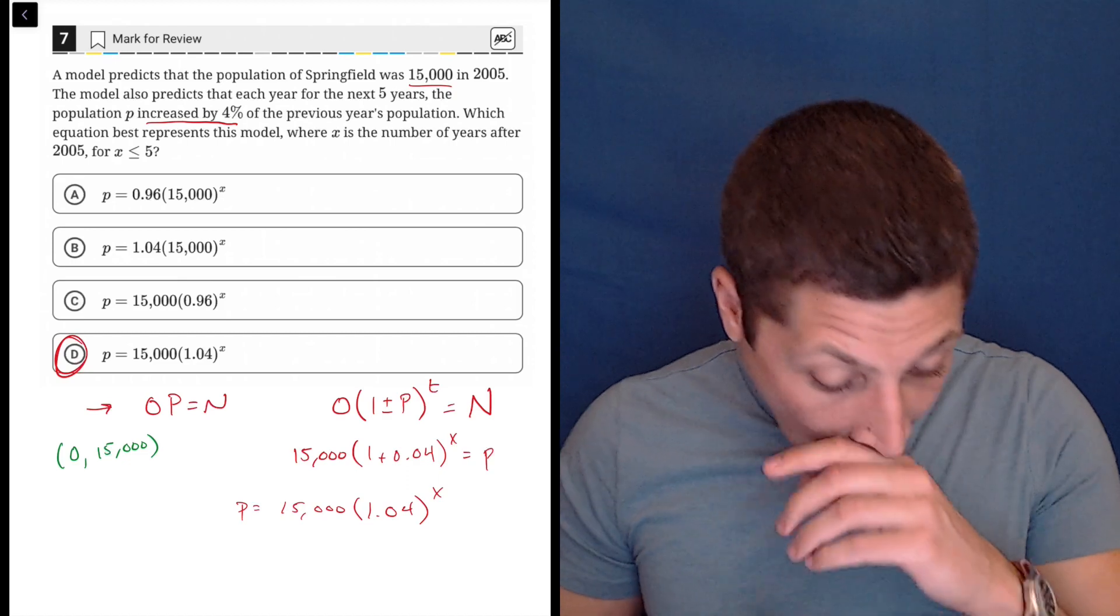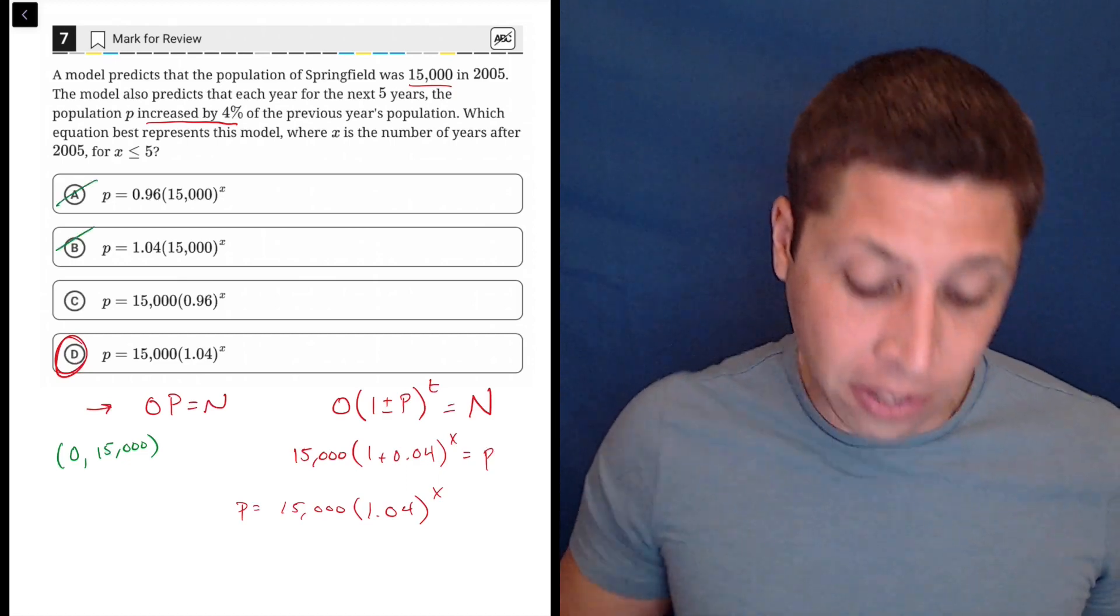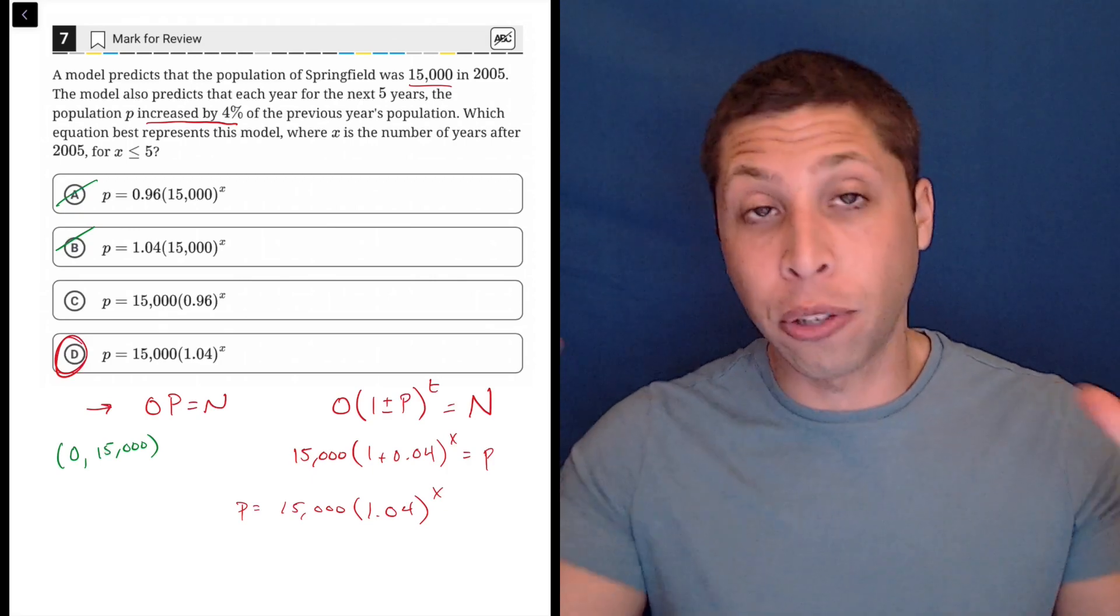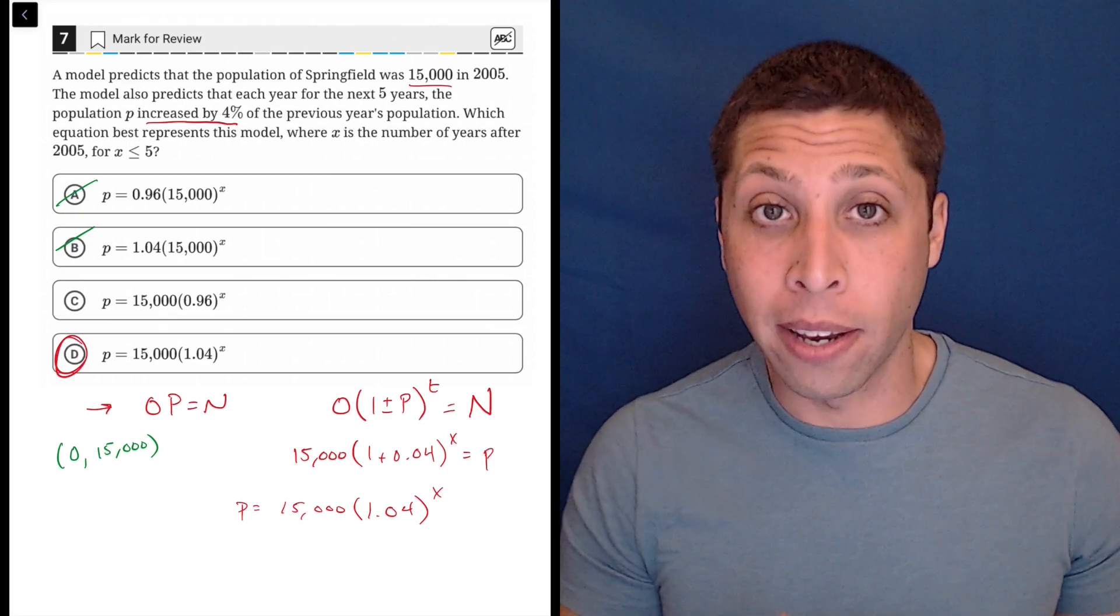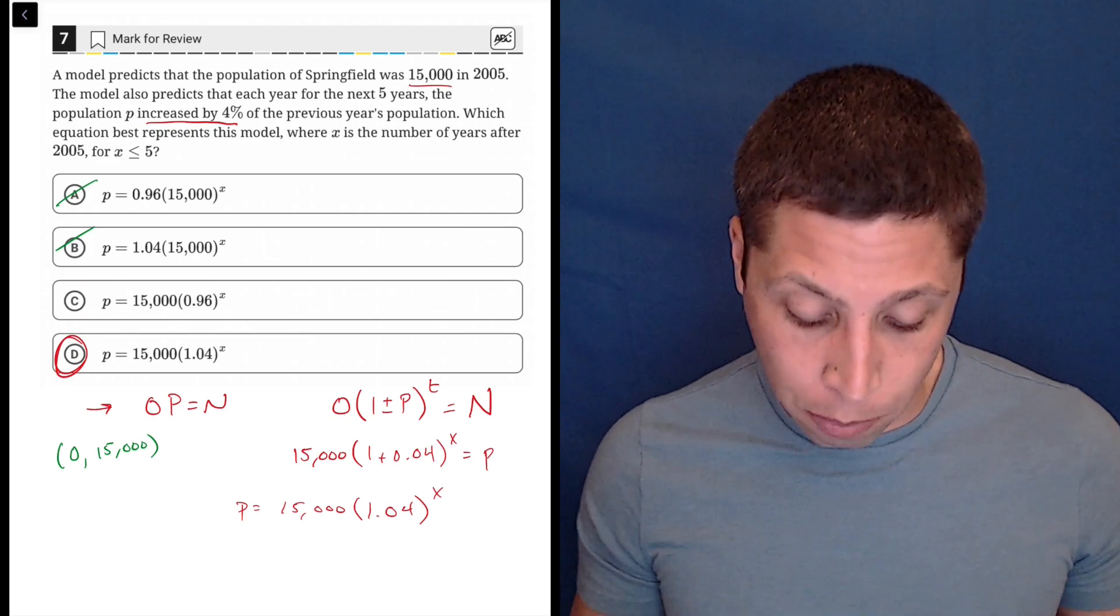And if we put 0 in for x, we would not get 15,000 out for choices A and B. The 15,000 would be turned into a 1 because anything raised to the 0 power is 1. So A and B would not work with that starting point.